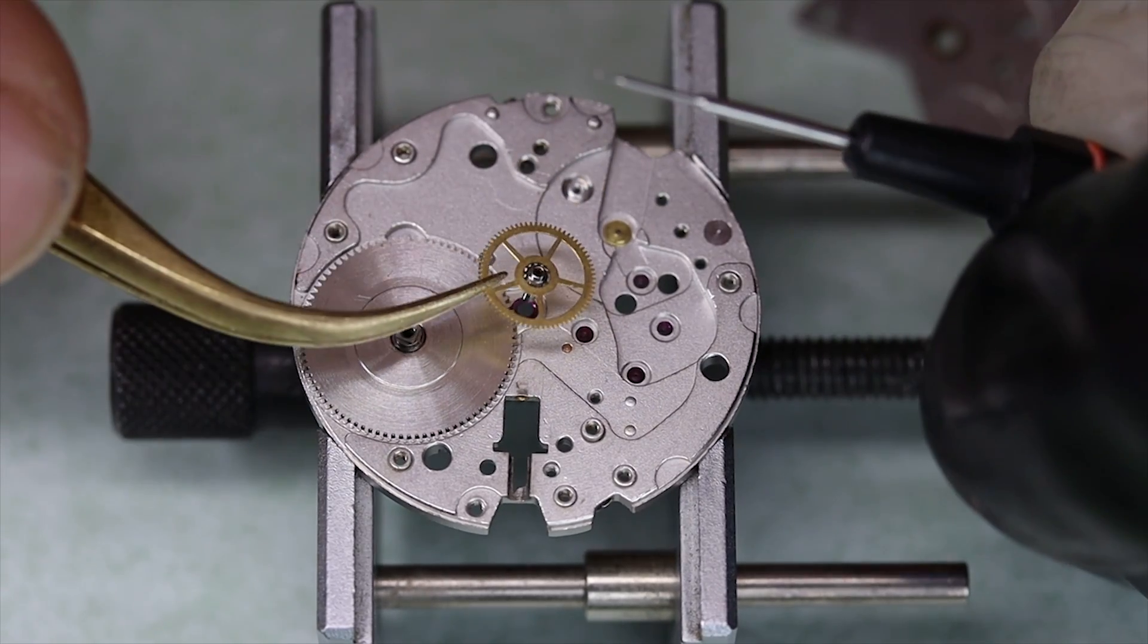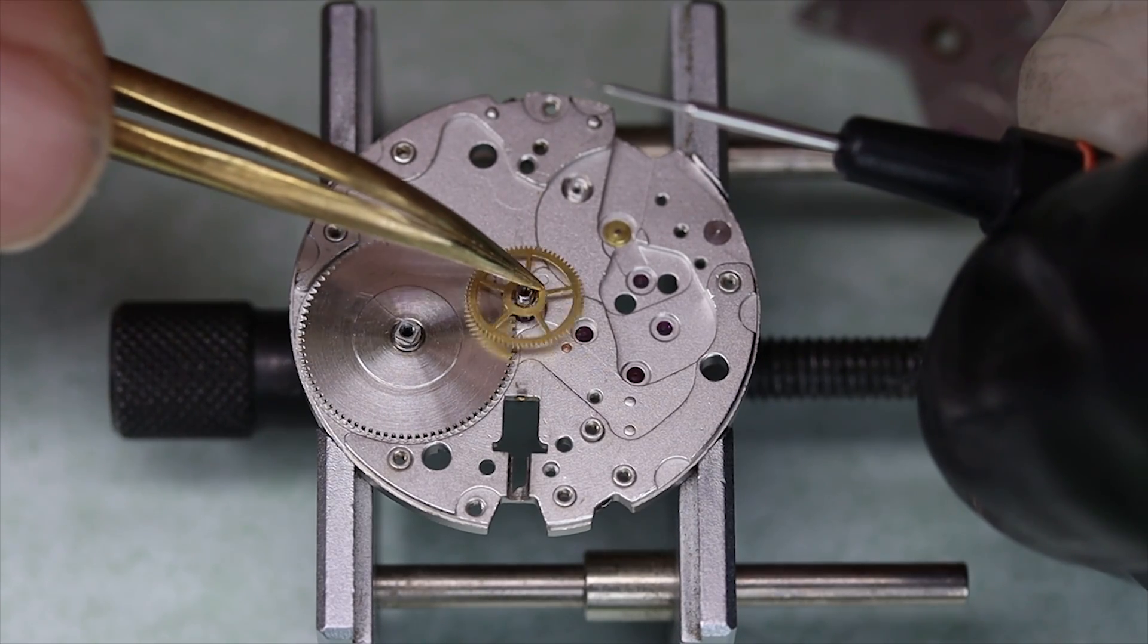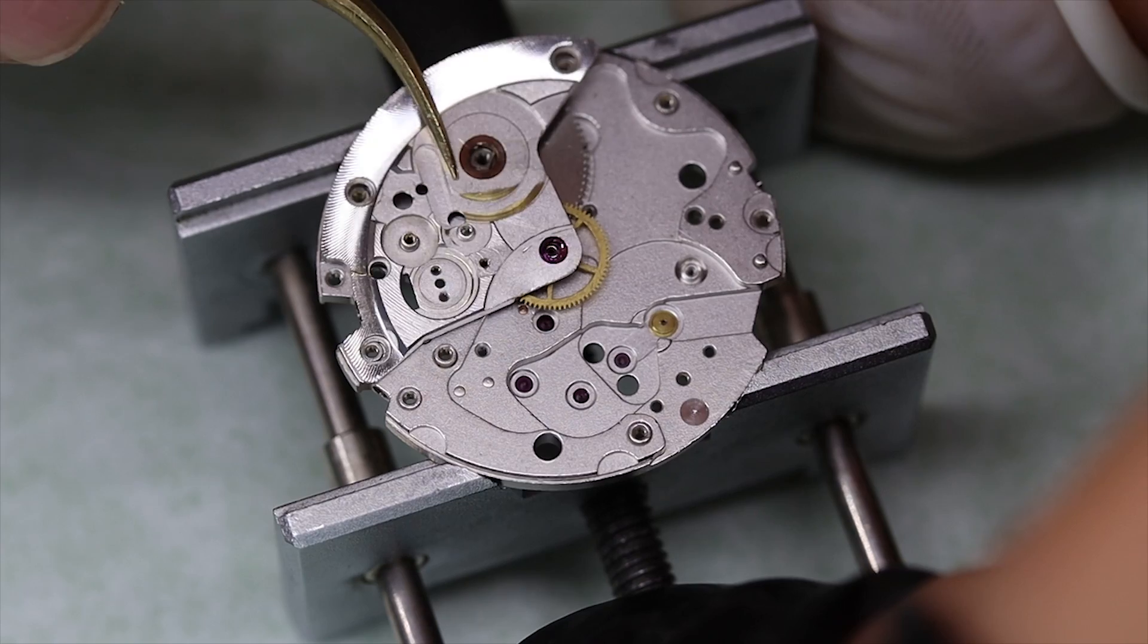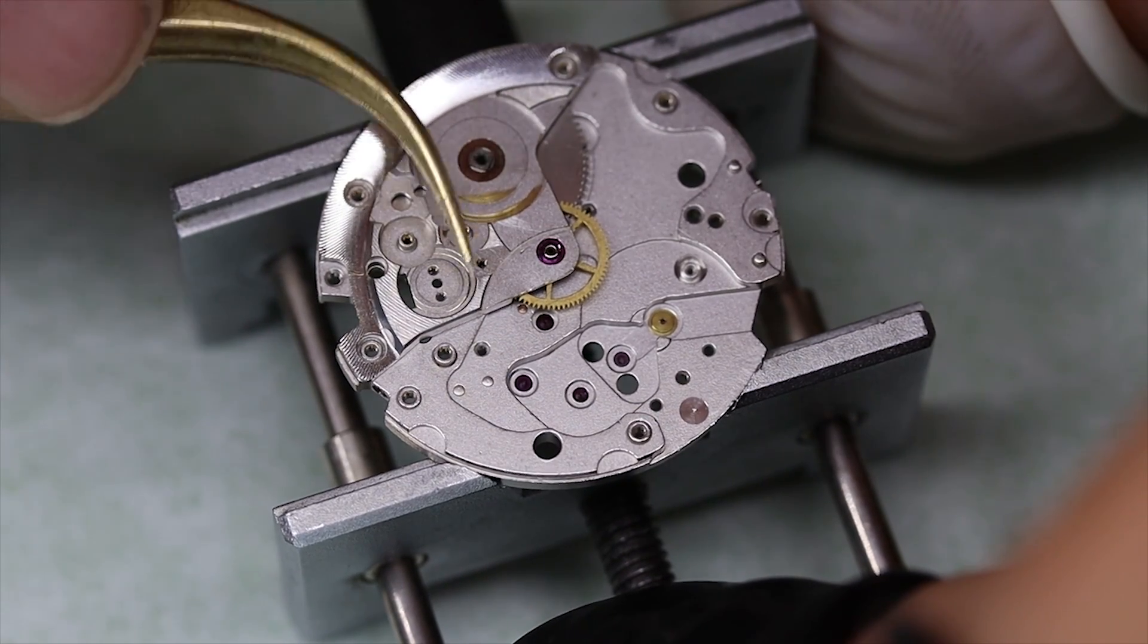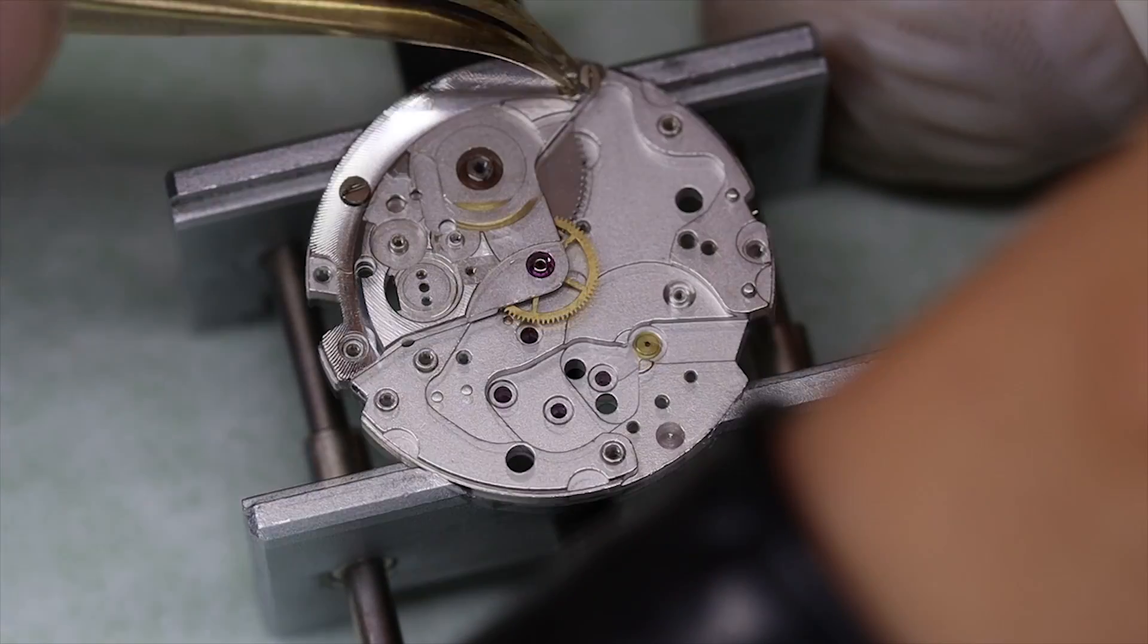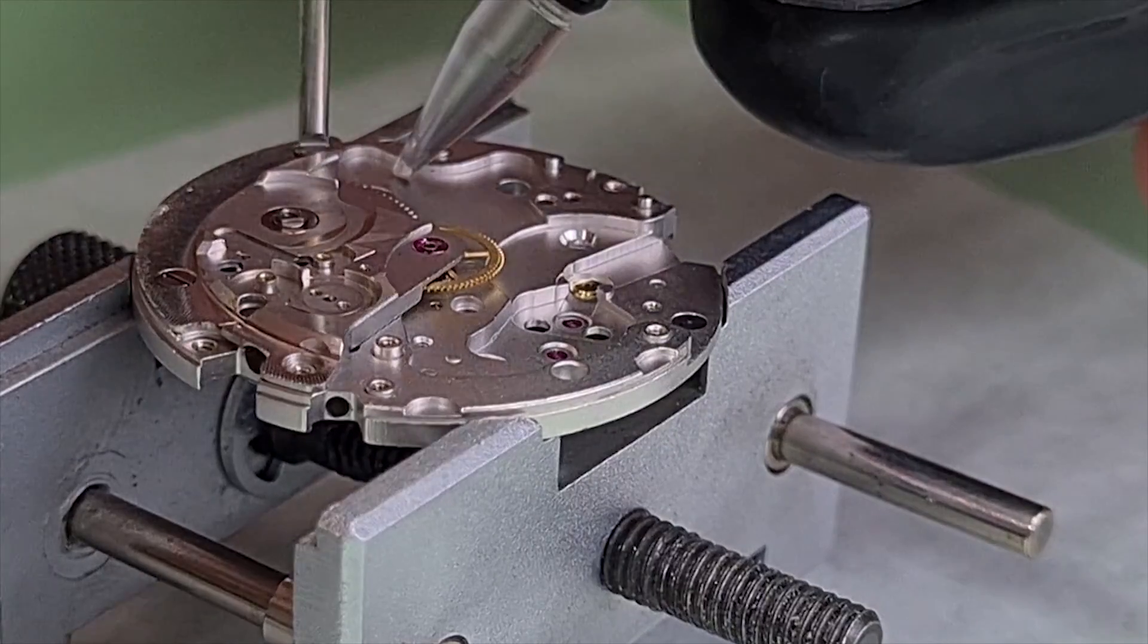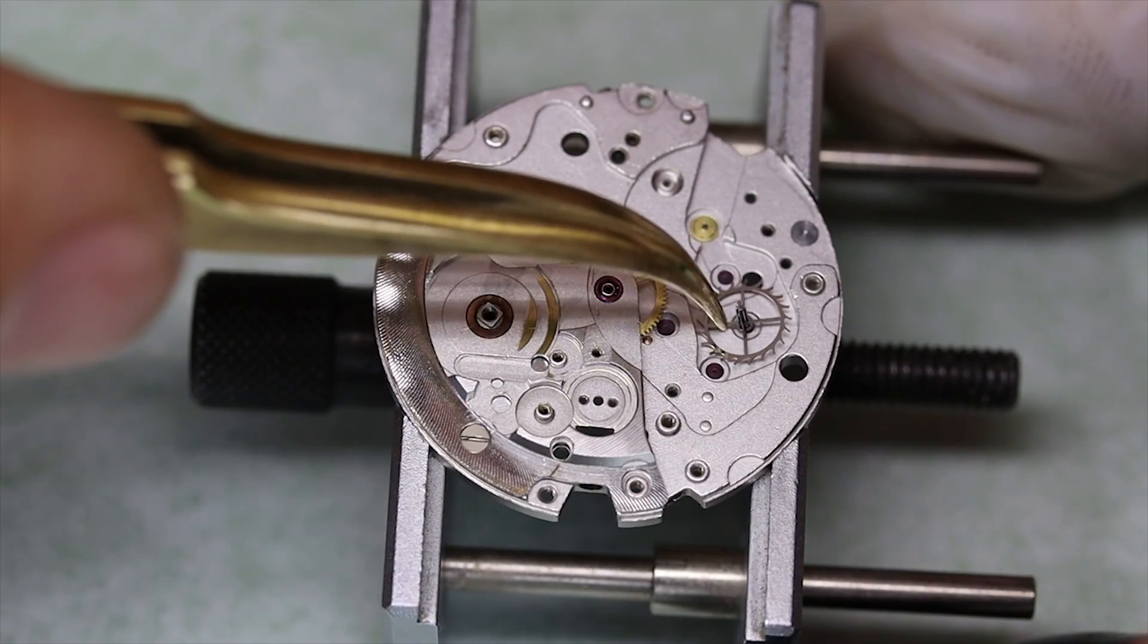Then we can put in the center wheel and then we can put on the bridge, we've of course cleaned it off camera. And we want to see a pretty snug fit, just a tiny little bit of play so that the barrel rotates freely. That looks all right.